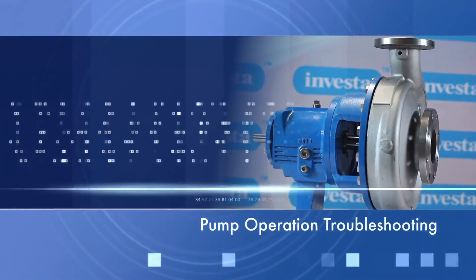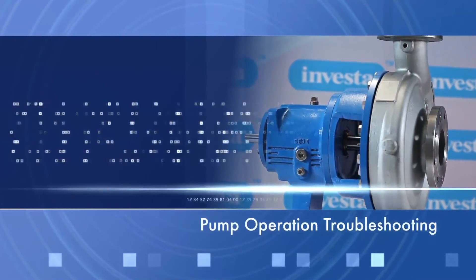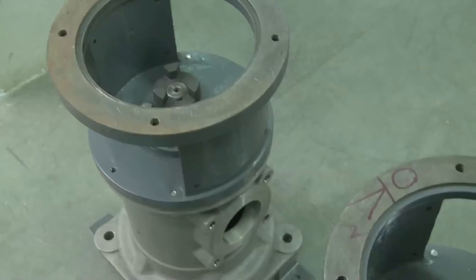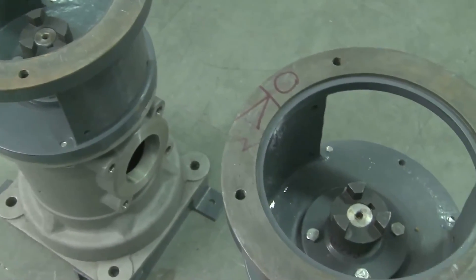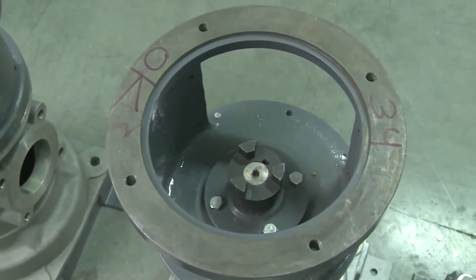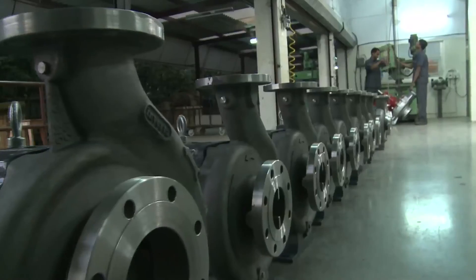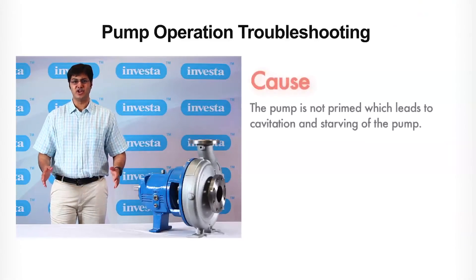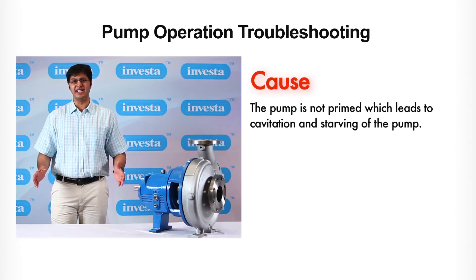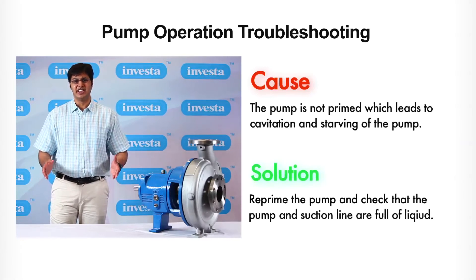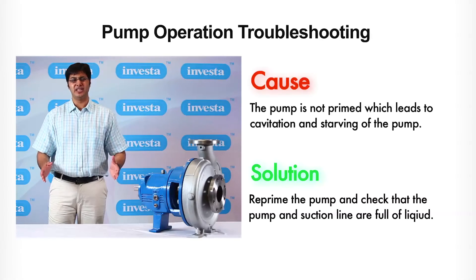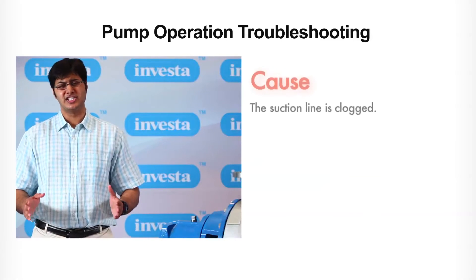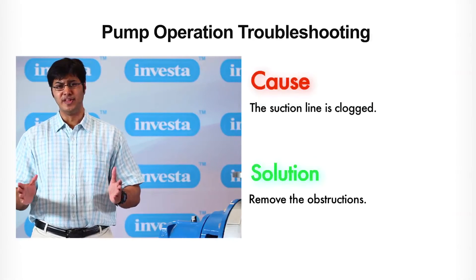Pump operation troubleshooting. Once your pump is installed, assembled and running, you need to be aware of some basic points for troubleshooting in case some common problems occur. We shall look at this in two stages. Number one: the pump is not primed, which leads to cavitation and starving of the pump — re-prime the pump and make sure that the pump and suction line are full of liquid. Number two: the suction line is clogged — remove the obstructions.